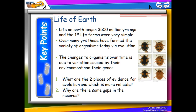Hi and welcome to this video on life on Earth. Today we are going to be looking at evolution. The first thing we need to know is that life on Earth is 3,500 million years old, or 3.5 billion years old. The first life forms present on Earth were very simple single-celled organisms, and for the first 2.5 billion years we only had single-celled or very simplistic organisms.